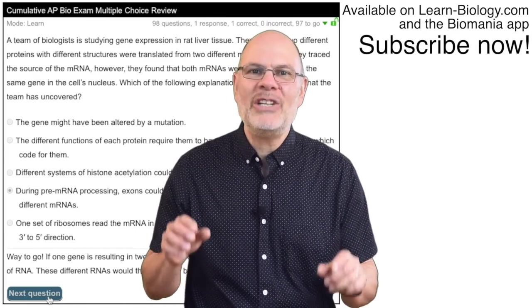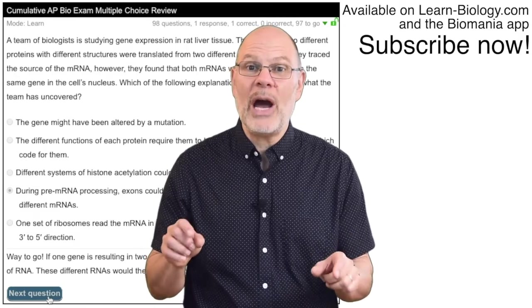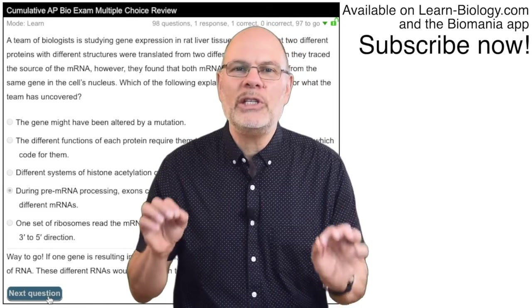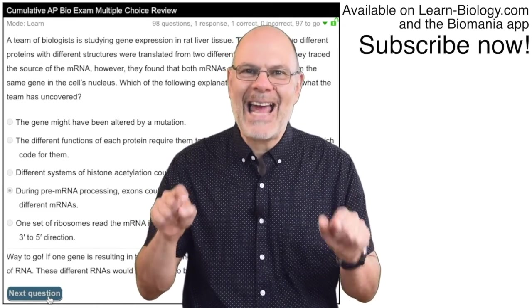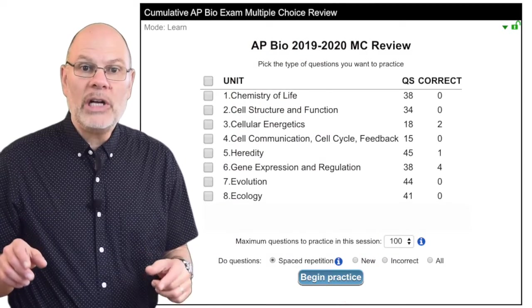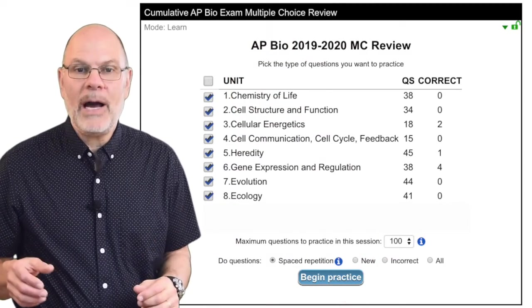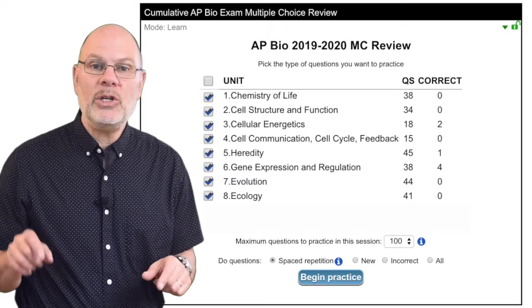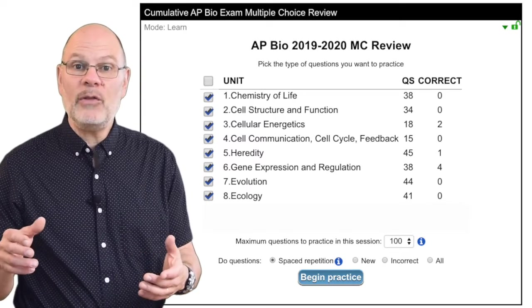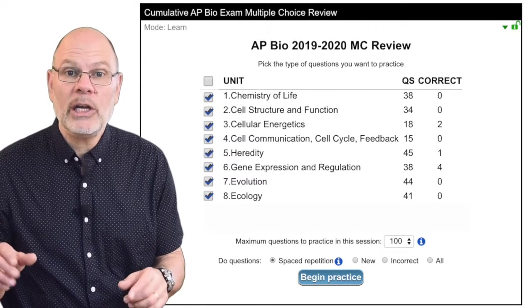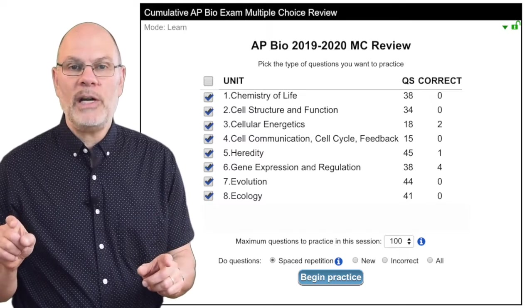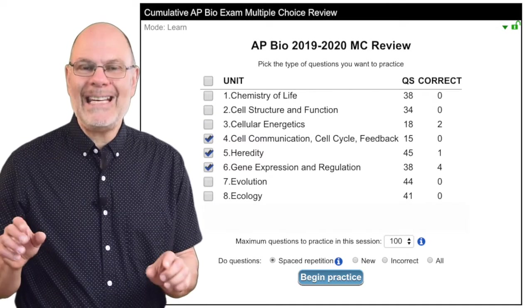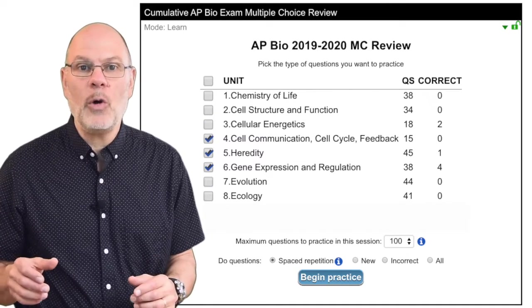It guides you to mastery by challenging you with the questions you got wrong until you know the material inside and out. The questions are organized into the 8-unit AP Bio Framework. You can use this menu to have Biomania randomly give you questions from the entire curriculum, which is by far the best way to review. Or you can choose any combination of topics that you want to focus on.